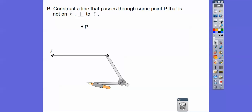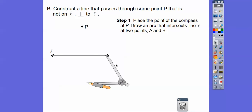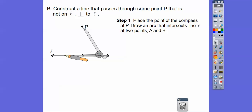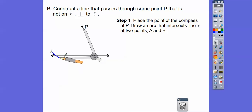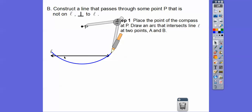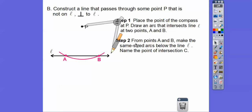Now we're going to construct a line that passes through some point P that's not on the line — constructing a perpendicular from this point straight down. We place the point of the compass up at P and draw an arc that intersects two points on line AB. Open up the compass so it arcs on both sides of the line, like a pendulum — we're interested in where the arc crosses on both sides.